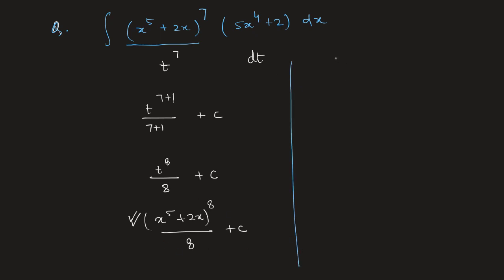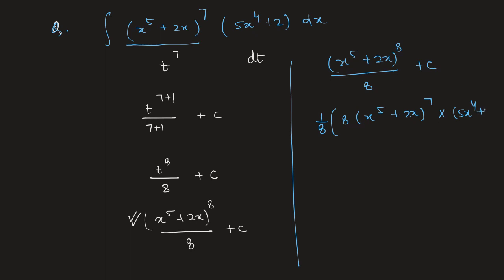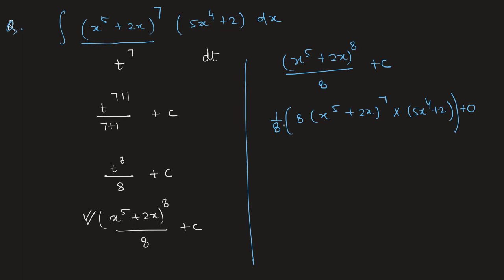To cross-check, differentiate (x⁵ + 2x)⁸/8 + c. The constant 1/8 comes out; applying the power rule gives 8(x⁵ + 2x)⁷; then chain rule gives (5x⁴ + 2). The 8s cancel, leaving (x⁵ + 2x)⁷(5x⁴ + 2), confirming our answer.